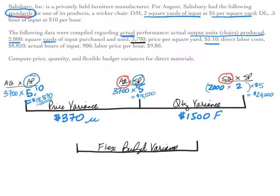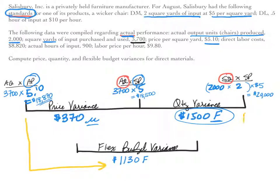The overall flexible budget variance can be calculated two ways. First, by summing the two variances: because they have different signs, the difference is $1,130, and we bring down the sign of the larger number — $1,500 favorable — so the result is $1,130 favorable. Alternatively, taking the difference of pegs one and three: actual cost $18,870 versus standard cost $20,000. We paid less than expected, so the difference of $1,130 is favorable.